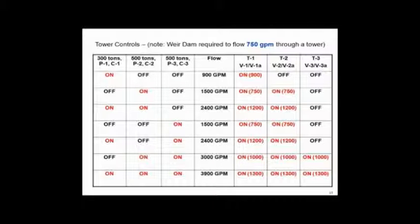So here we go. I've got three towers. I've got weir dams in my towers. The minimum allowable flow rate is 750 GPM. They're 500 ton towers, 10 degree range, 3 GPM per ton. So 300 ton towers have a flow rate of 900. 500 ton towers have a flow rate of 1500. Let's look at the little staging sequence here to see if we can understand this.